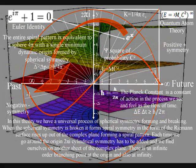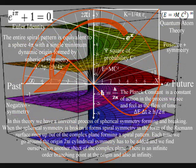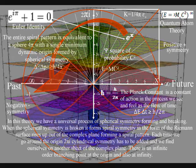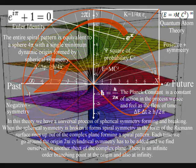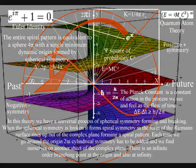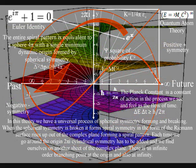Euler's identity is at the heart of this process. The easiest way of looking at this is that the only number you could add to the number one to get zero is minus one, and this forms a rotation that breaks the spherical symmetry.